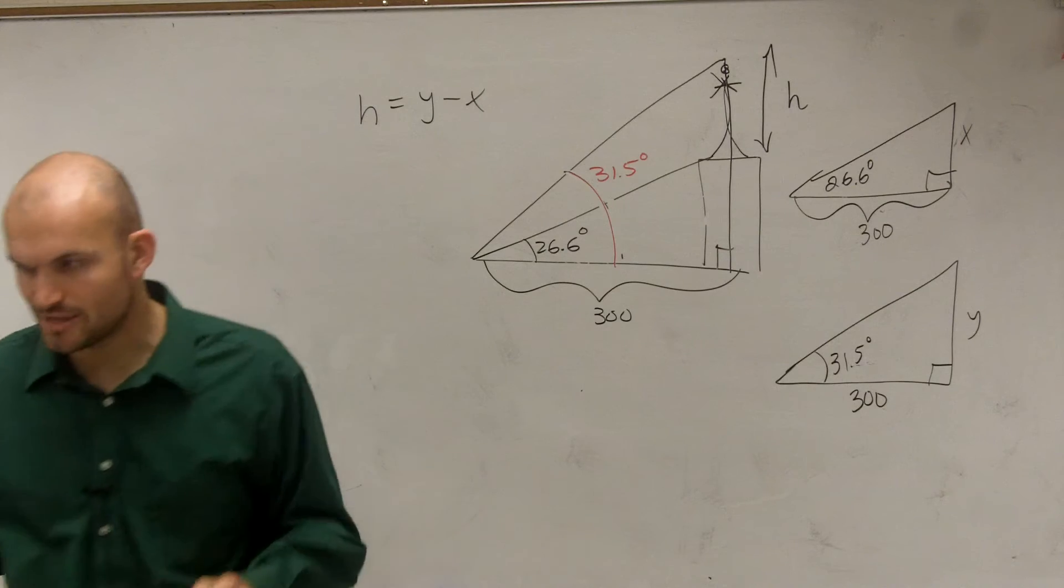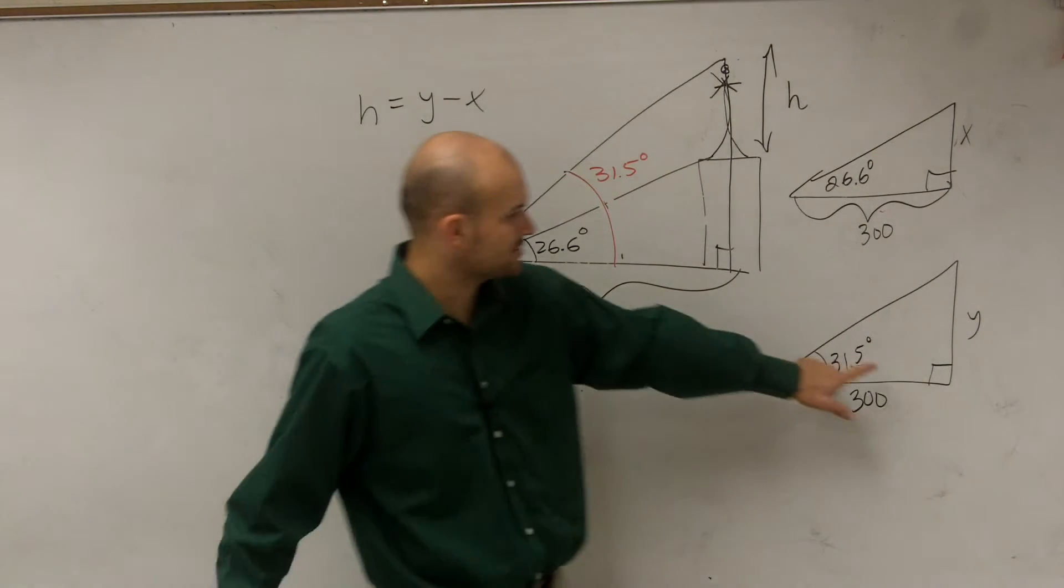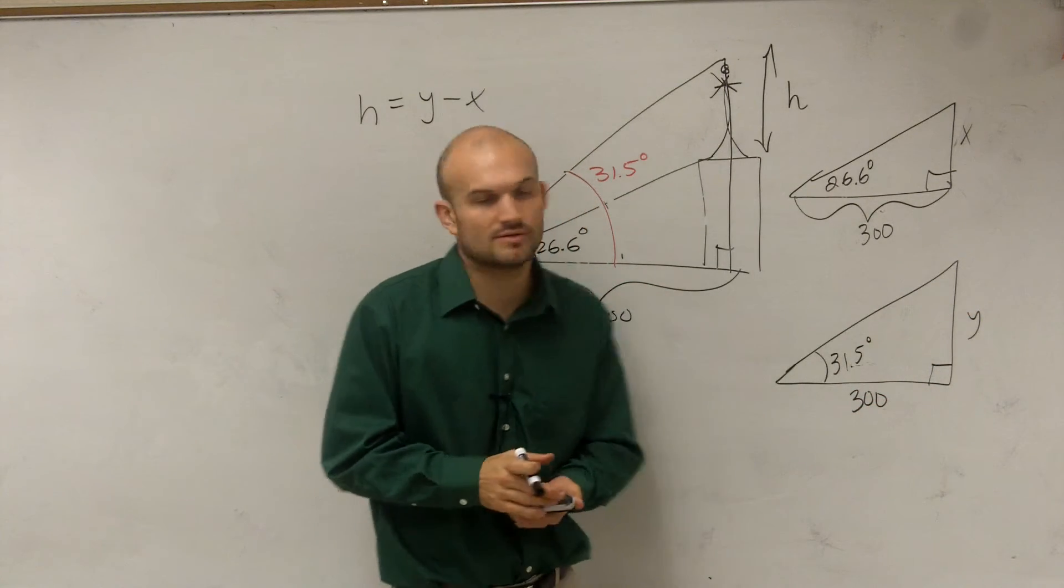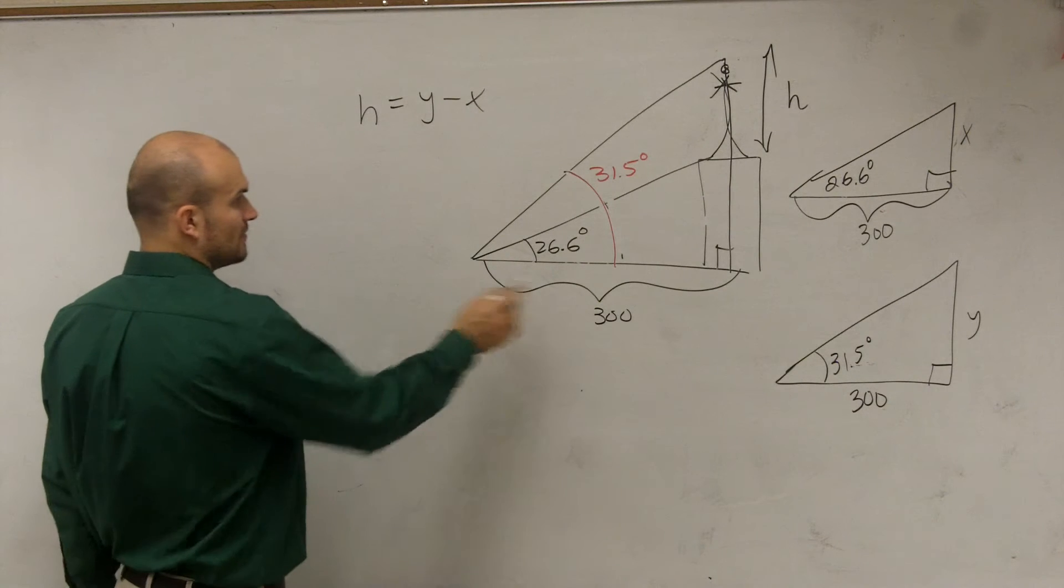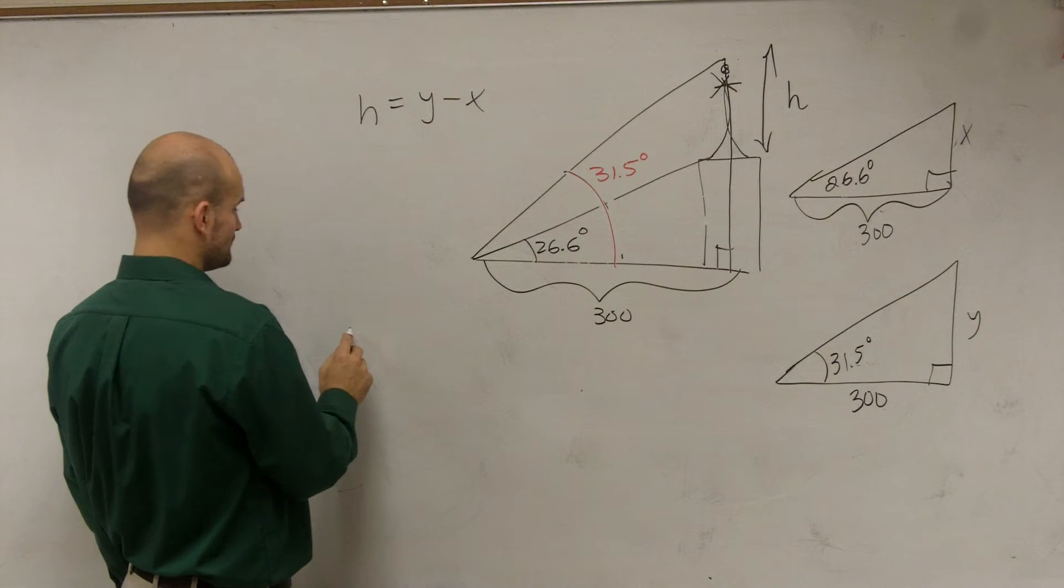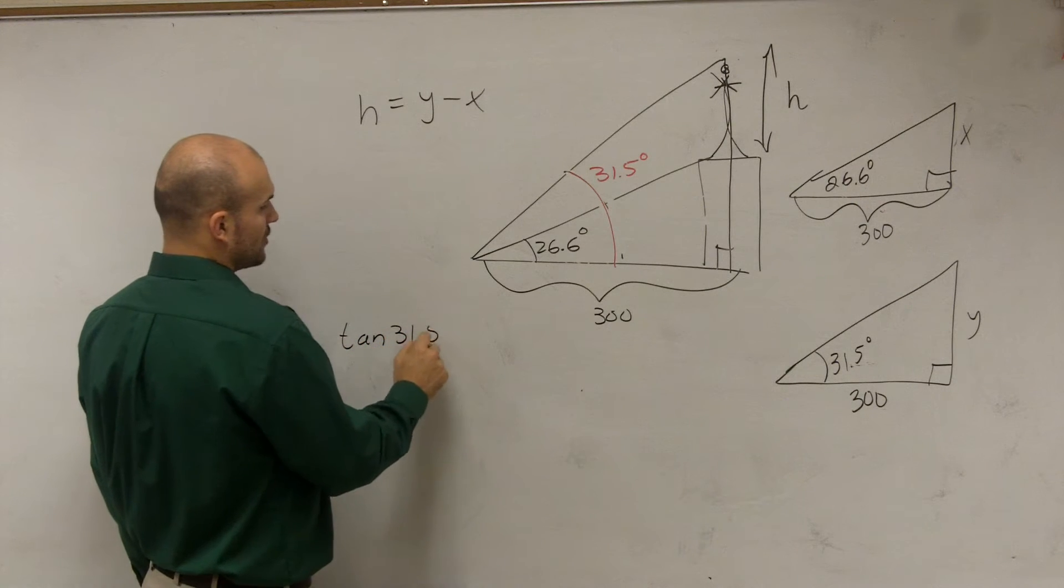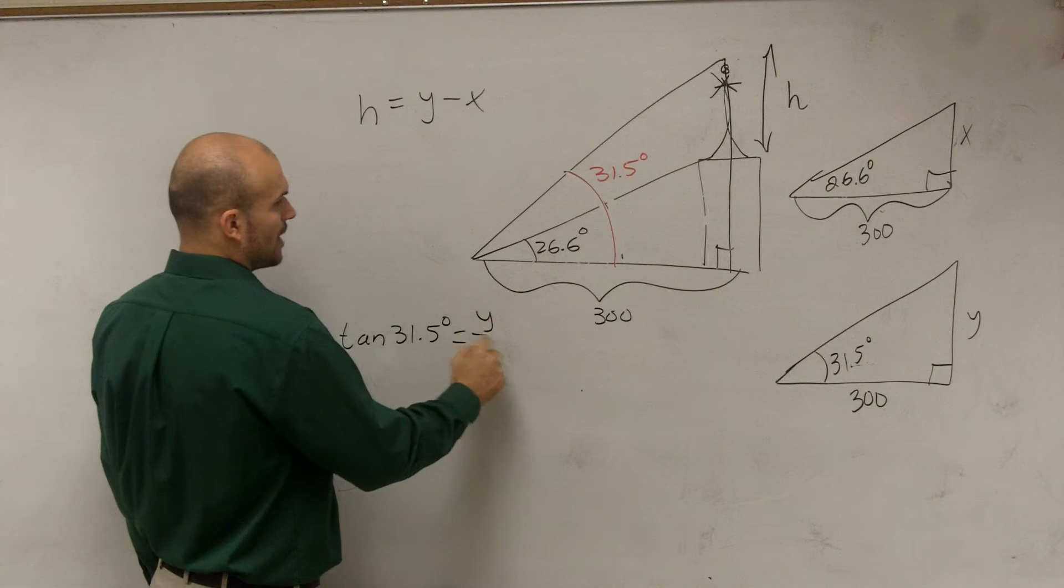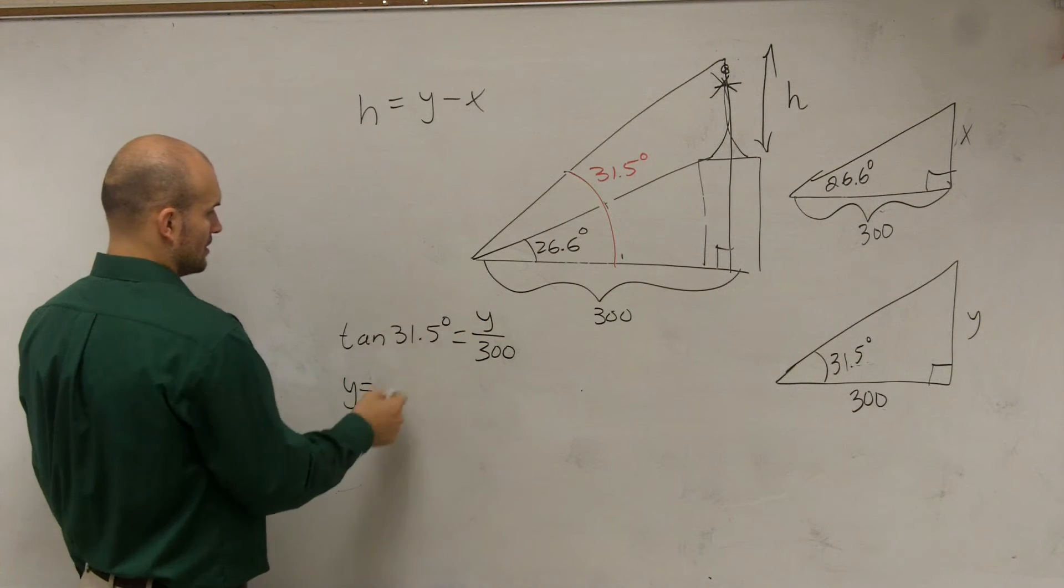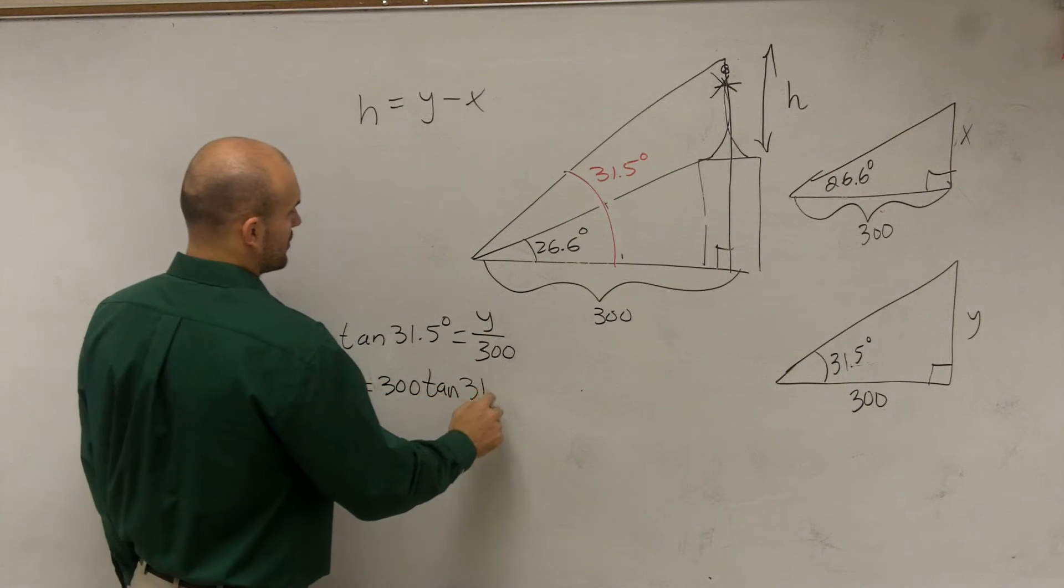So let's go and look at which trigonometric functions we'll want to use. So I'm given my angle theta. Here's my right triangle. You can see that I have opposite over adjacent. So therefore I'm going to want to use the tangent. So for the first one, which is for y, we could say tangent of 31.5 degrees equals y over 300. Therefore, y equals 300 times tangent of 31.5.